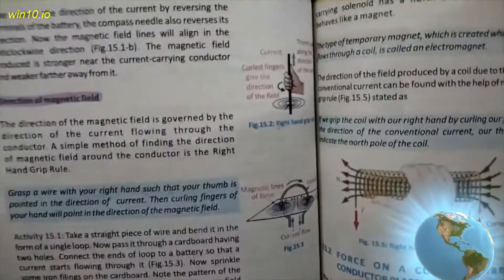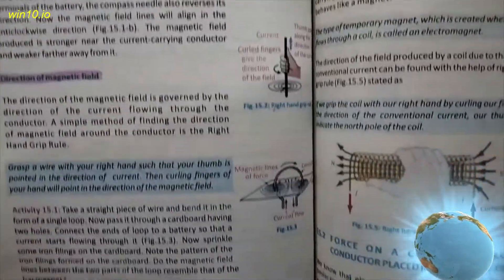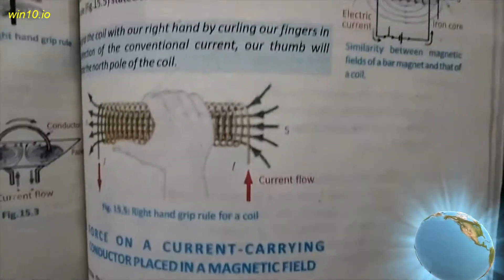Page number 120, direction of magnetic field of a solenoid. Page number 121. This solenoid topic up to here complete. Next.